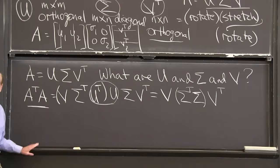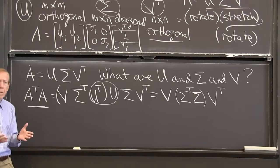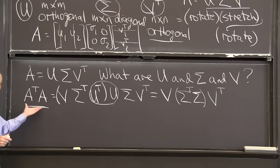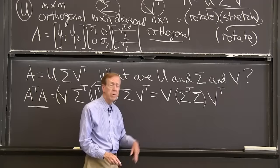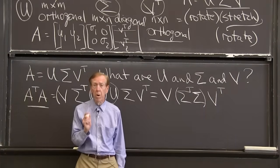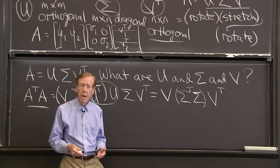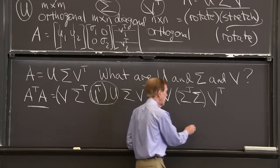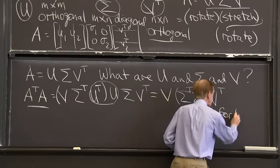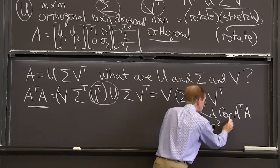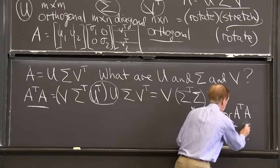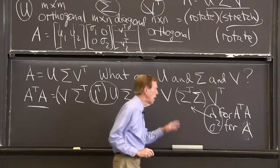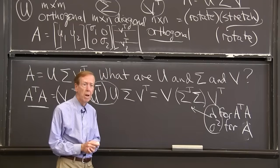Once again, A was rectangular and completely general and we couldn't see perfect results. But when we went to A transpose A, that gave us a positive semi-definite matrix, symmetric for sure. Its eigenvectors will be orthogonal. This V matrix, the eigenvectors for this symmetric matrix are orthogonal and the eigenvalues are positive. They're the squares of the singular values. This is telling me that the lambdas for A transpose A are the sigma squareds for A. Lambda for A transpose A is sigma squared for the matrix A.